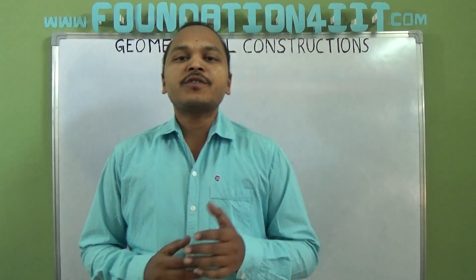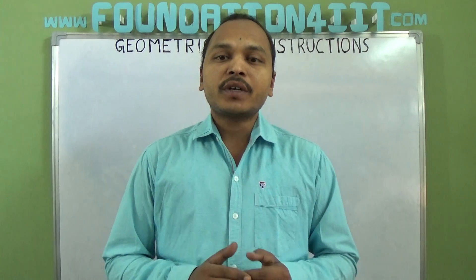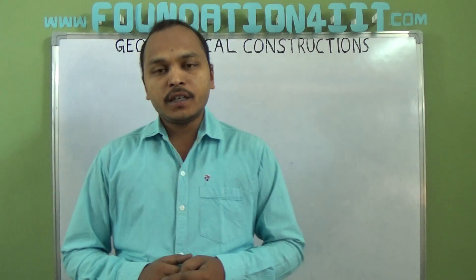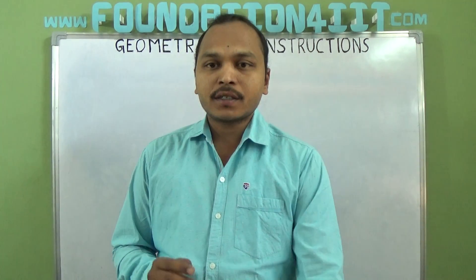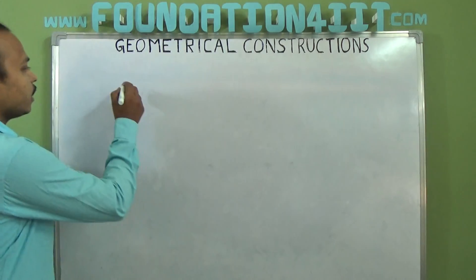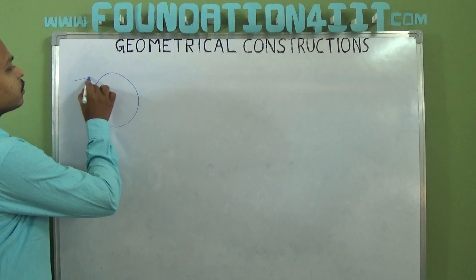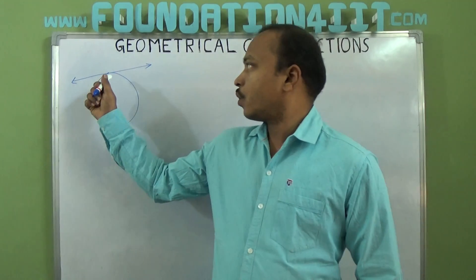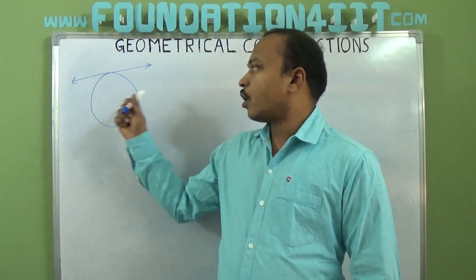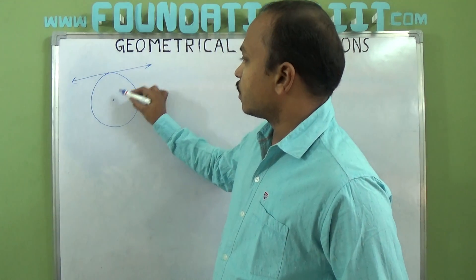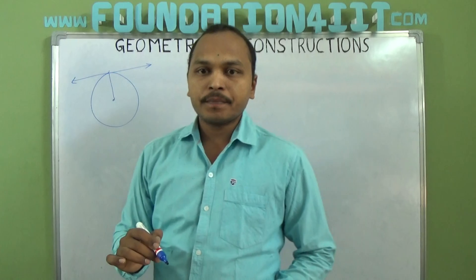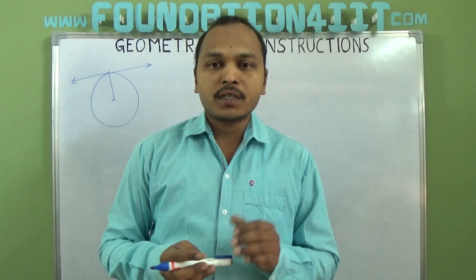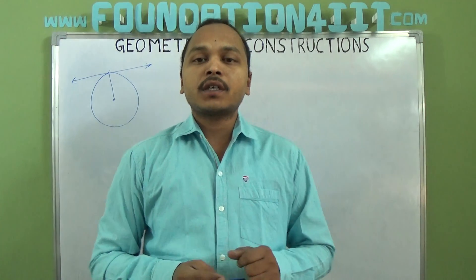Welcome to the educational channel. In this video I'm going to explain how to construct a tangent to a circle when the center of the circle is known. A tangent is a line that touches the circle at only one point. One important rule: the radius to the tangent at the point of contact should be 90 degrees.